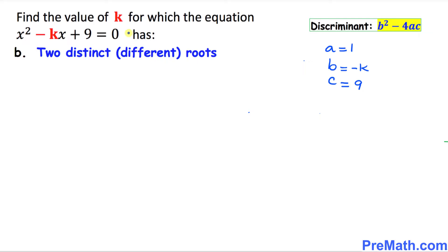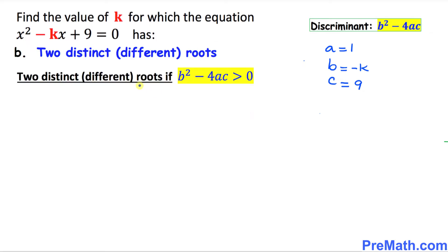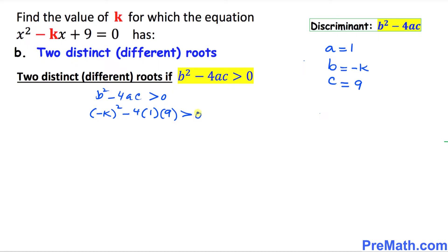In the next part, we have to find the value of k for this given quadratic equation if it has 2 distinct or different roots. This condition happens only if the discriminant b squared minus 4ac is greater than 0. Filling in the values: negative k squared minus 4 times 1 times 9 is greater than 0.